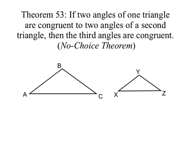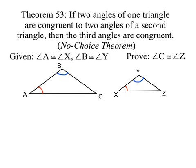So we draw a pair of triangles, and we're given that angle A is congruent to angle X, and angle B is congruent to angle Y. And we're trying to prove that angle C is congruent to angle Z.